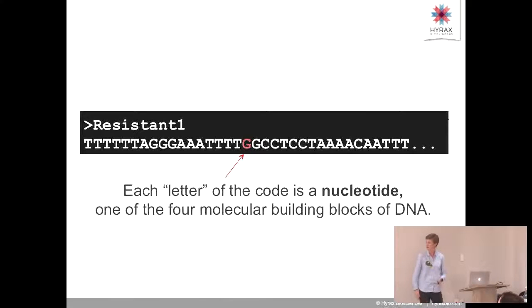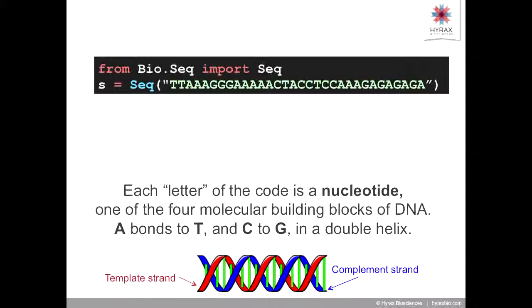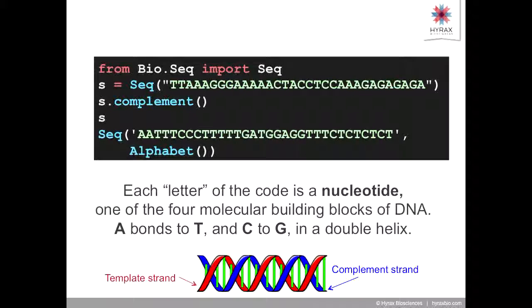Every letter of the code is a nucleotide, one of the four molecular building blocks of DNA. In the double helix, a letter A will bond to a letter T, and a letter C will bond to a letter G. We can jump straight into our first bit of BioPython. You have two strands: the template strand and the complement strand. If you import a sequence from bio.seq and go s.complement, it'll give you the complementary sequence. It's really nice to not have to write this yourself because if you stuff it up, you're in serious trouble.